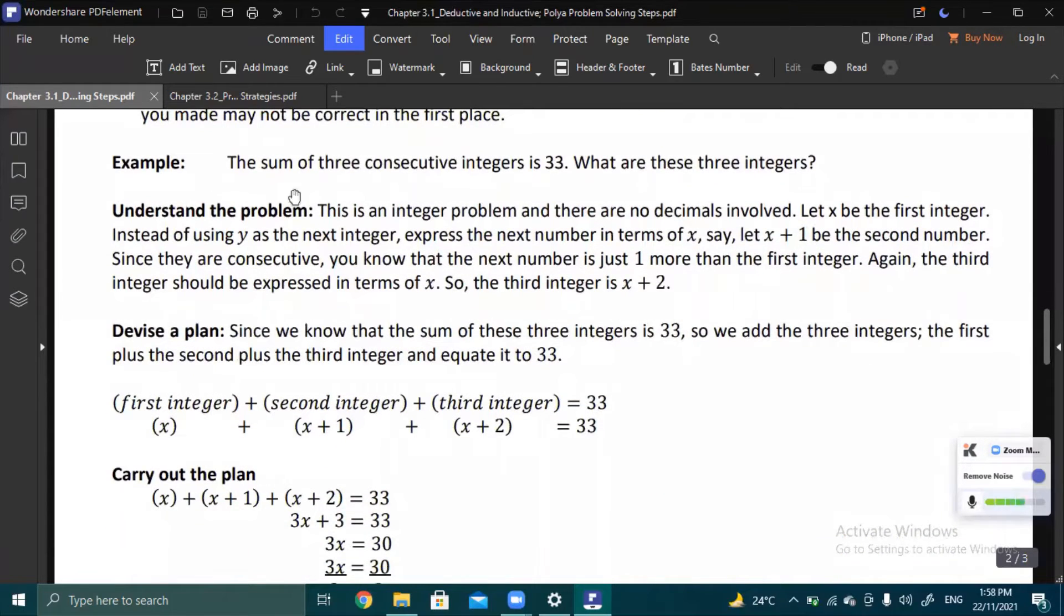We have here an example. The sum of three consecutive integers is 33. What are these three integers? First step is to understand the problem. In this problem, you're finding three consecutive integers whose sum is 33. That's the idea. Since they're unknown, you can set a variable for each integer. Notice that integer means whole numbers or counting numbers, so there's no decimal. The answer should not contain decimals.